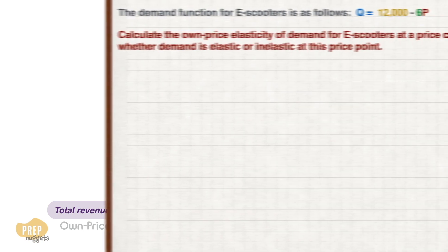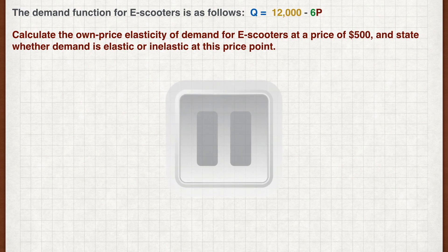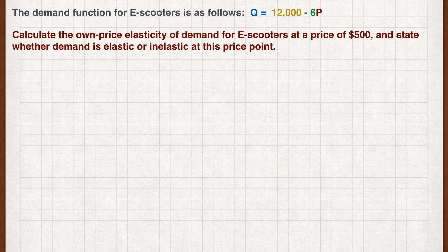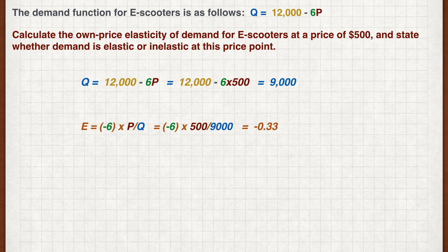Let's work on an example. The demand function for e-scooters is as follows. Calculate the own price elasticity of demand for e-scooters at a price of $500, and state whether demand is elastic or inelastic at this price point. First, we calculate the quantity demanded at that price point. Plugging $500 into the demand function, we get a quantity of 9,000. The slope of the demand function is minus 6, so the function for elasticity of e-scooter demand gives us an elasticity of minus 0.33. As the absolute value of the elasticity is less than 1, demand is inelastic at this price point.